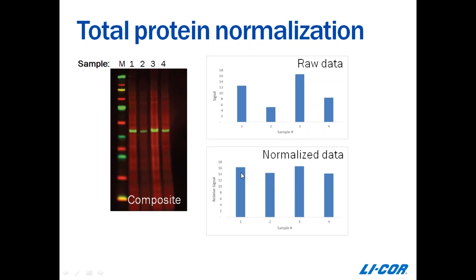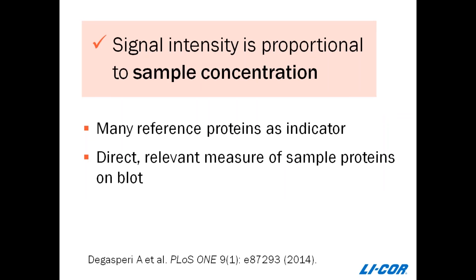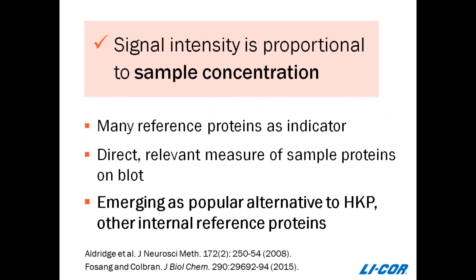This experiment shows total protein staining in action. Four different NIH 3T3 cell lysate samples are loaded on this blot, incubated with protein stain to generate an image used to quantify total sample protein in each lane. Then the target protein ERK was detected on that same membrane by Western blotting and quantified. The raw data show a range of signal intensity, but normalization to total protein staining really clarifies the meaning of those results — correcting for the inconsistent sample loading reveals that the target protein levels are actually pretty stable in these samples.